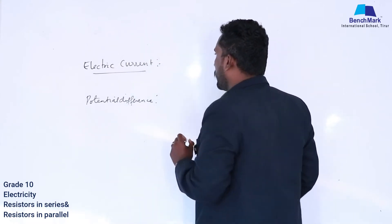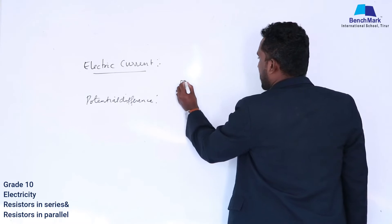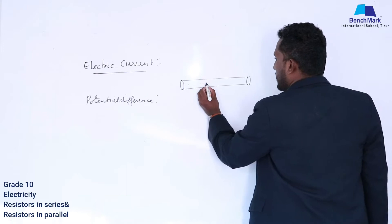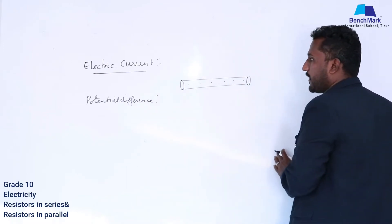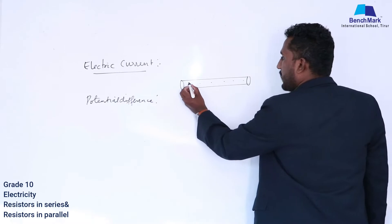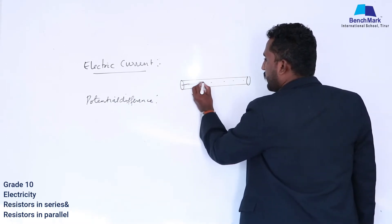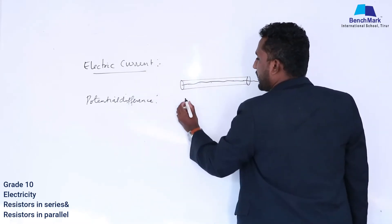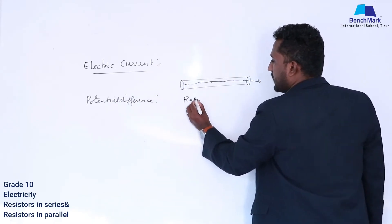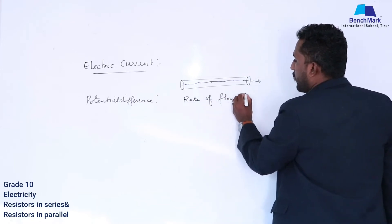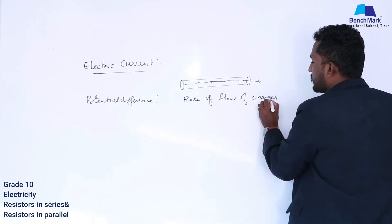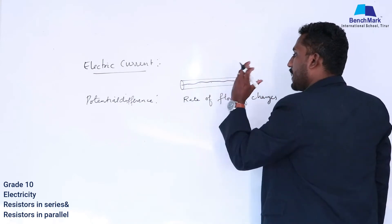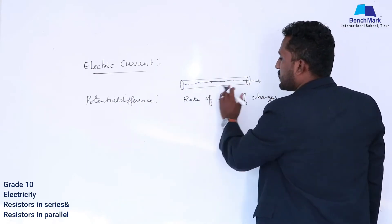Electric current is nothing but if we consider a conductor which consists of free electrons — electrons have charge — if this electron flows, if the charge flows, that is what we call electric current. So electric current is the rate of flow of charges. Inside a conductor, when charge flows, how much the charge flows, that is what we call current.